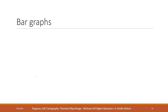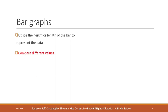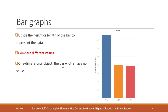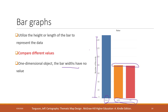The bar graph is also simple and very common. It is used to show values in different categories and compare them. Remember that it is a one-dimensional object, so the bar width has no meaning — we only compare the height or length of the bars. Here we see three variables where the first has the highest value and the second and third have relatively the same value.